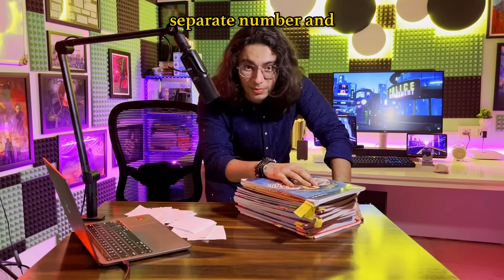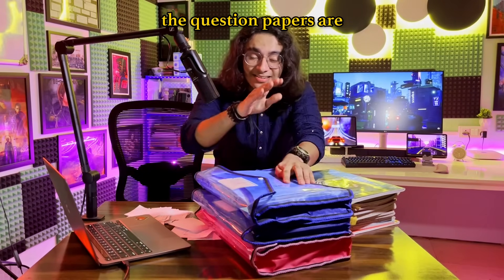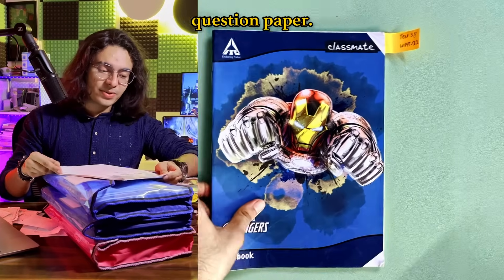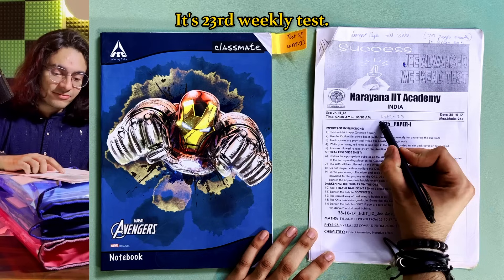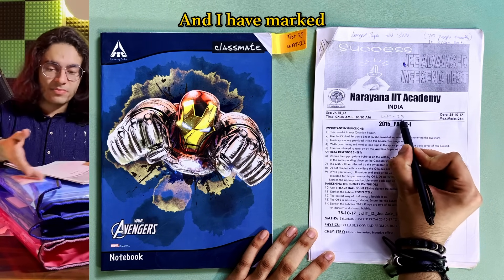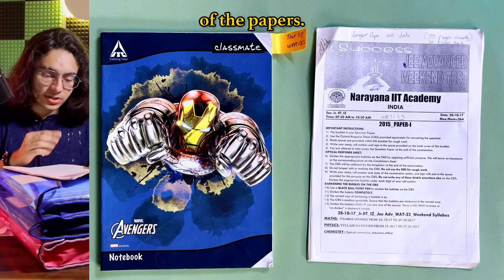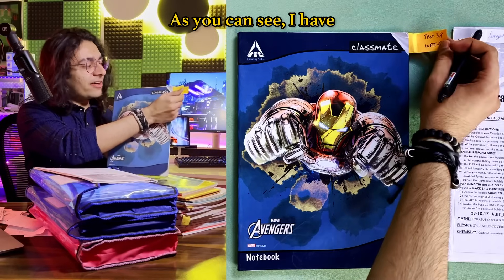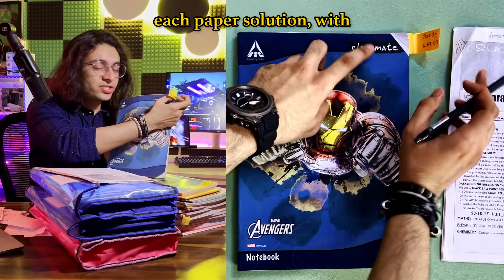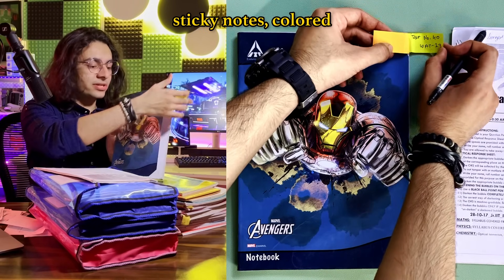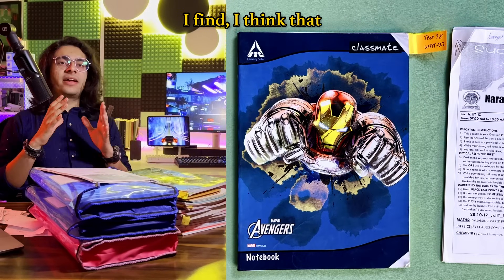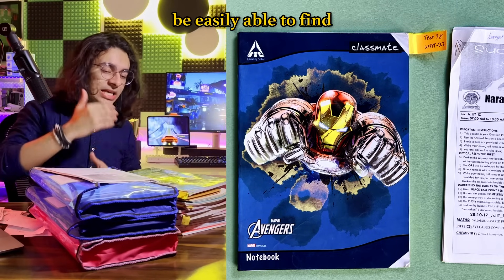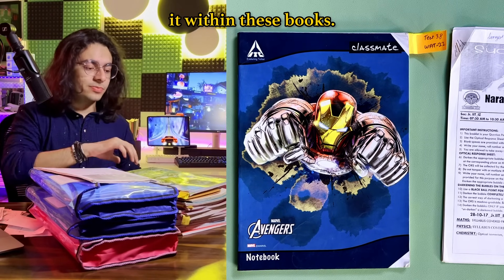Each book has a separate number and the question papers are still chronologically stored in these folders. Here's one question paper it's 23rd weekly test and I have marked the number on each of the papers and this is one of the solution manuals I created. As you can see I have marked the beginning of each paper solution with sticky notes colored papers so that whenever I think that this is a solution that I am looking for I will be easily able to find it within these books.